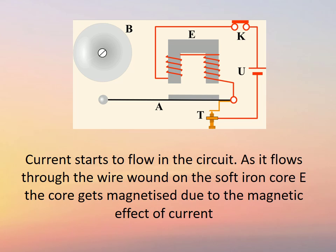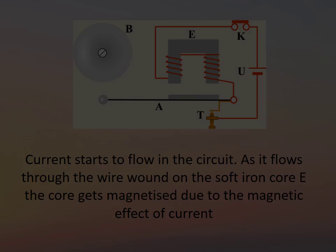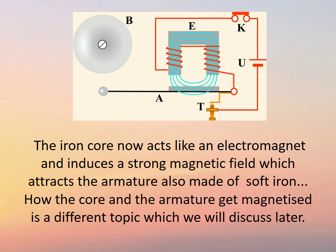Current starts to flow in the circuit. As it flows through the wire wound on the soft iron core E, the core gets magnetized due to the magnetic effect of current. The iron core now acts like an electromagnet and induces a strong magnetic field.